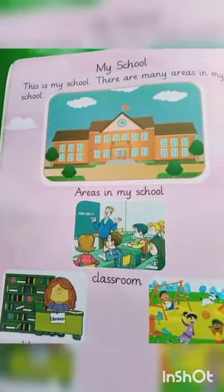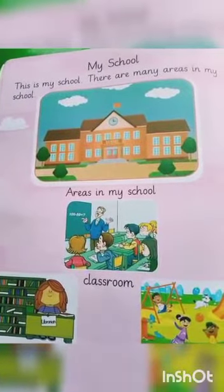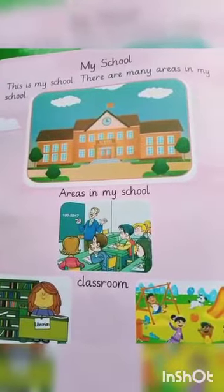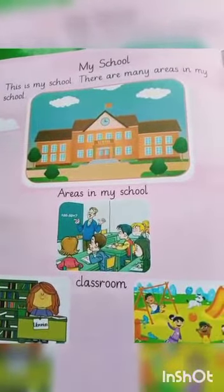Let's revise. The topic of the day is 'My School.' This is my school and there are many areas in my school. One by one, the names of the areas are: number one, the classroom; then the library; then the playground.